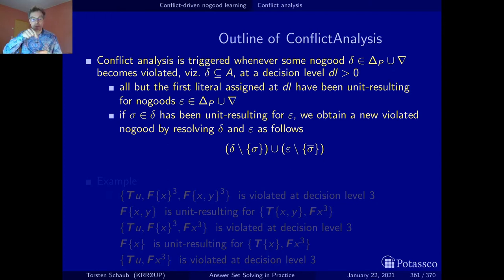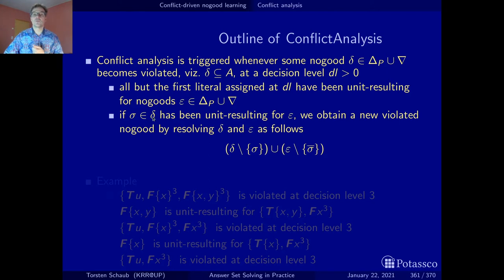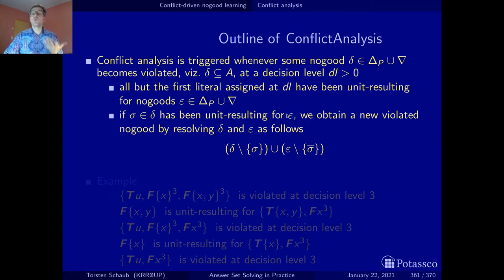Our strategy is to eliminate literals that are on the last decision level. Delta is our conflict no-good — either the original conflict detected or one already transformed. We pick one of its literals that belongs to the very last decision level and take the no-good that led to its unit propagation. We do resolution on both: we take the conflict no-good, take the reason for one of the literals, remove it from the conflict no-good and the complementary literal from the reason, and this gives us a new conflict no-good.